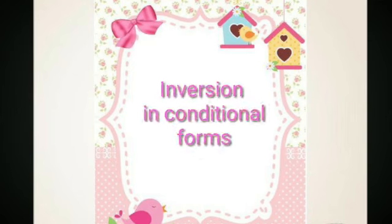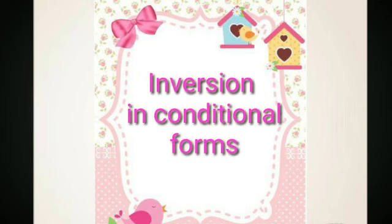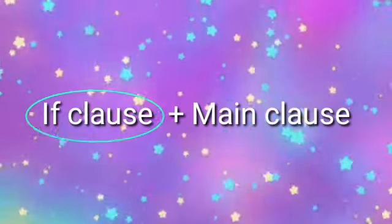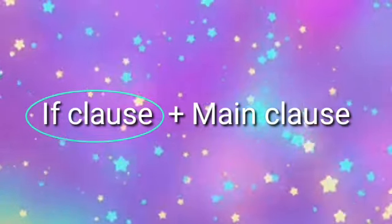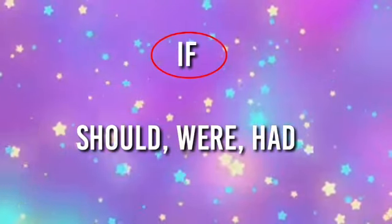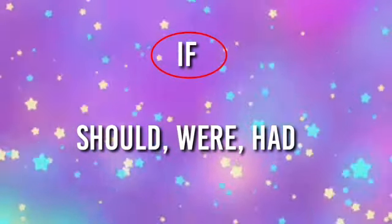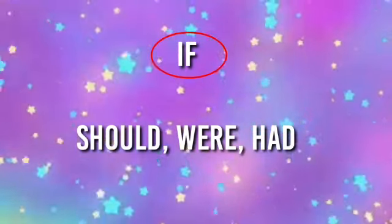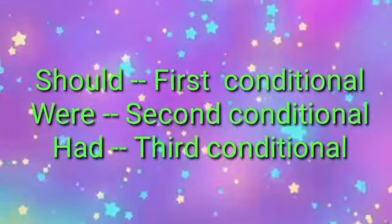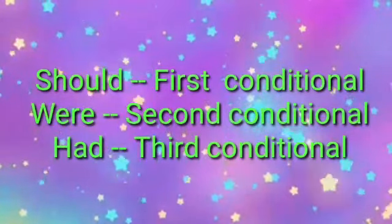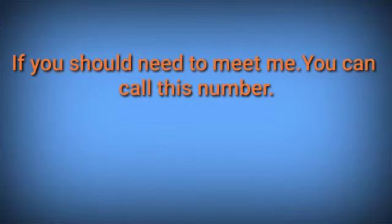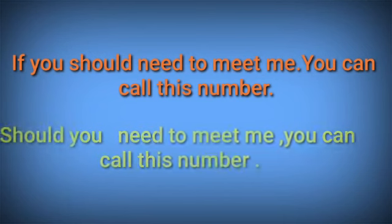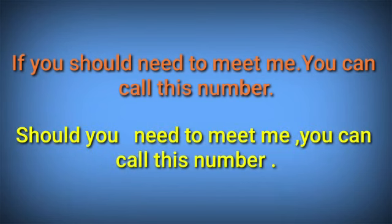Next, we can see inversion in conditional forms. In the conditional clause, the condition word 'if' is dropped and the inverted form takes the place of the if-clause. The condition word 'if' is rephrased with 'should', 'were', or 'had'. We use 'should' for the first conditional type, 'were' for the second conditional type, and 'had' for the third conditional type. After the inversion word, we place the subject.